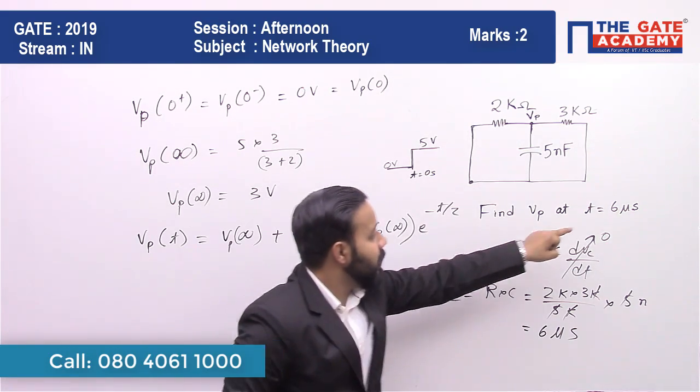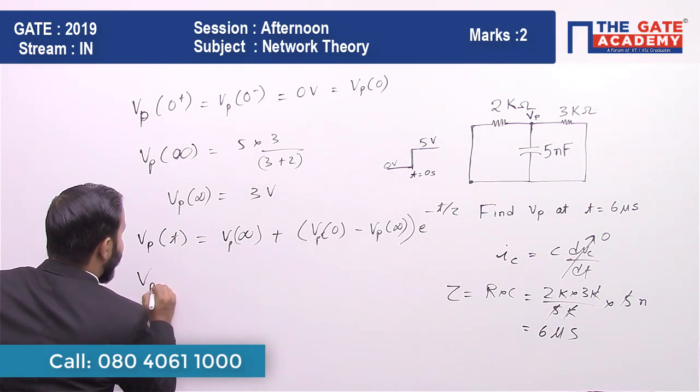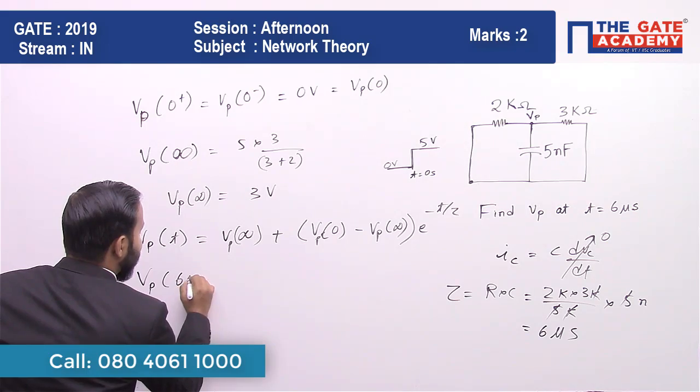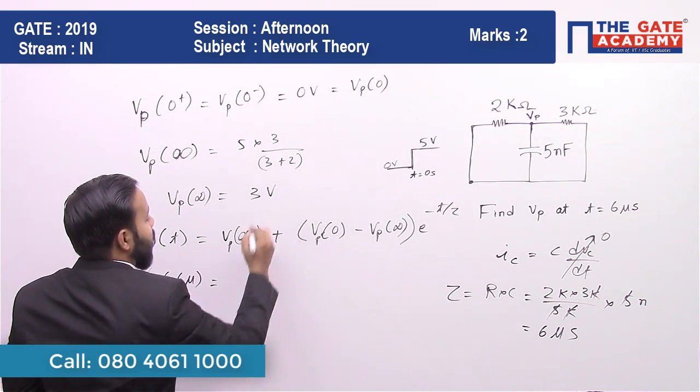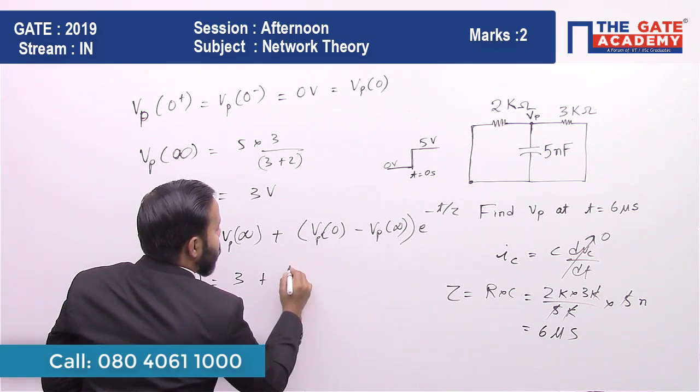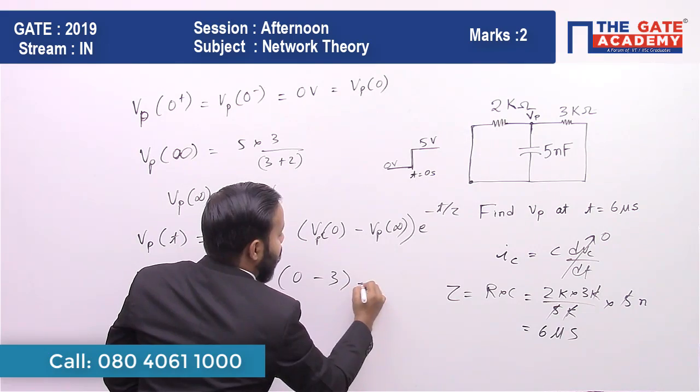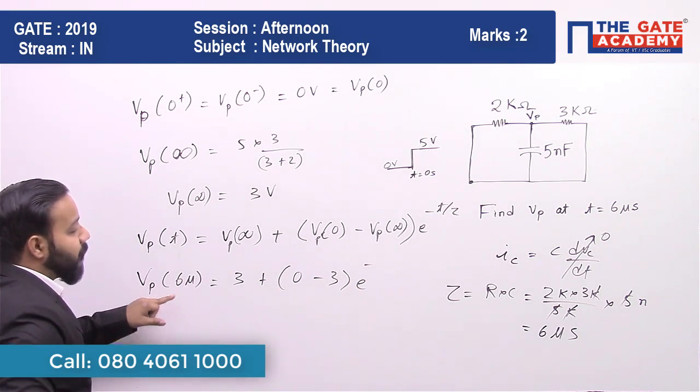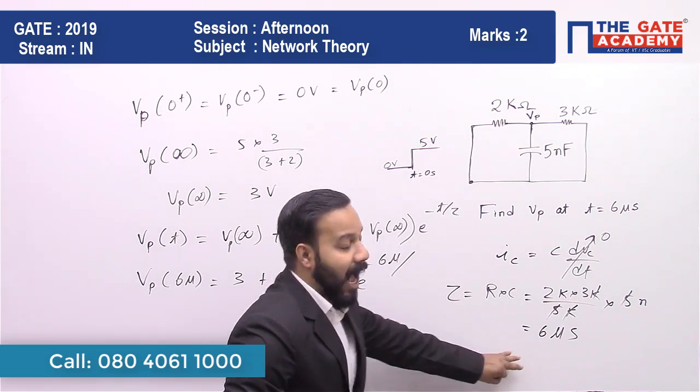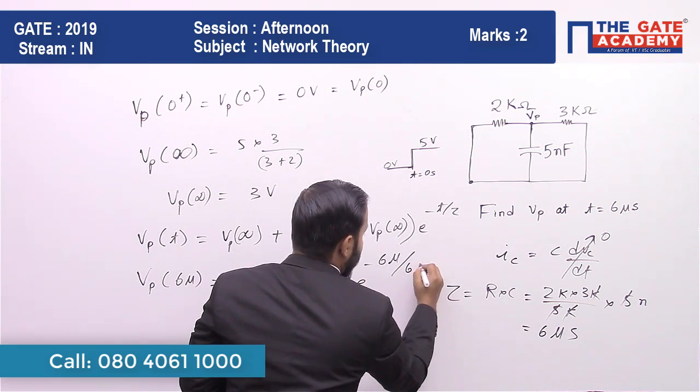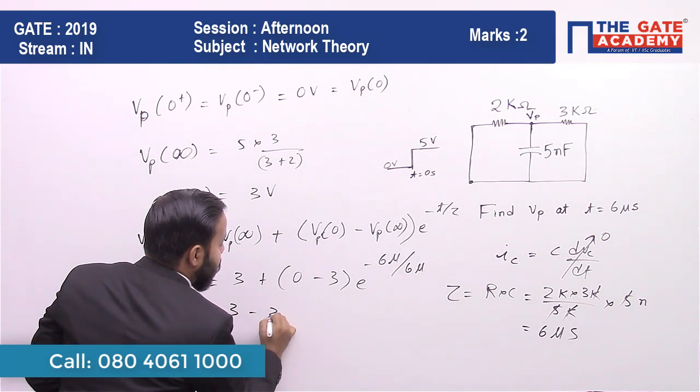And the time at which they have asked us to find this value of voltage vp is also 6 microseconds. So what we will get is vp: the final is 3 volt plus [0 minus 3] e to the power minus t, where t is 6 microseconds.